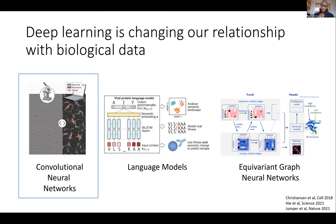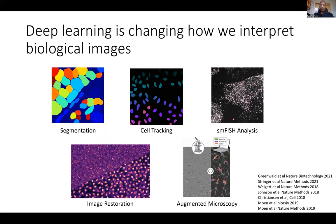Today's talk is going to focus on convolutional neural networks as applied to imaging data. I just want to highlight this to show the context within which the work I'm presenting today is taking place. This is what's happening just in the life sciences — across every field of science, be it chemistry, material science or physics, similar revolutions are happening. It's a really remarkable time to be a scientist.